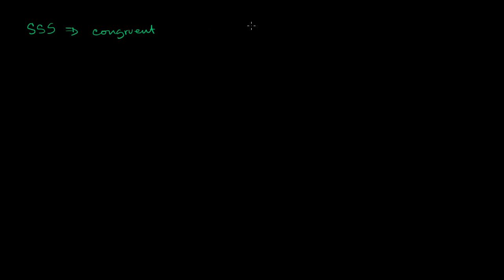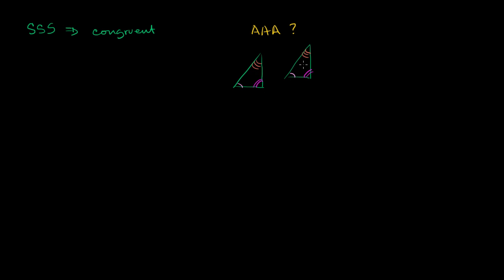What about angle, angle, angle? So if I have a triangle like this, and I have another triangle like this, and if we know that this angle is congruent to that angle — which means their measures are equal — and that angle is congruent to that angle, can we say that these are two congruent triangles? In the first case, it looks like maybe it is, at least the way I drew it here.